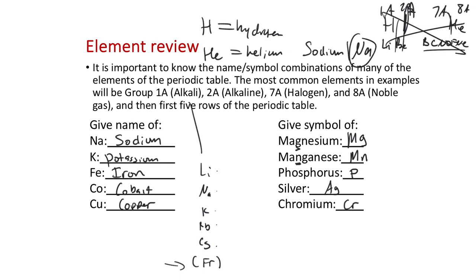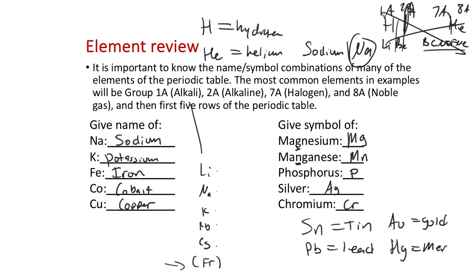Silver is Ag and chromium is Cr. We also want to know the first four to five rows of the periodic table. Some bigger elements beyond the fourth or fifth row that come up a fair bit are tin, lead, gold, and mercury — Hg. Those are probably the four examples beyond the fourth row that you'll want to make sure you recognize.